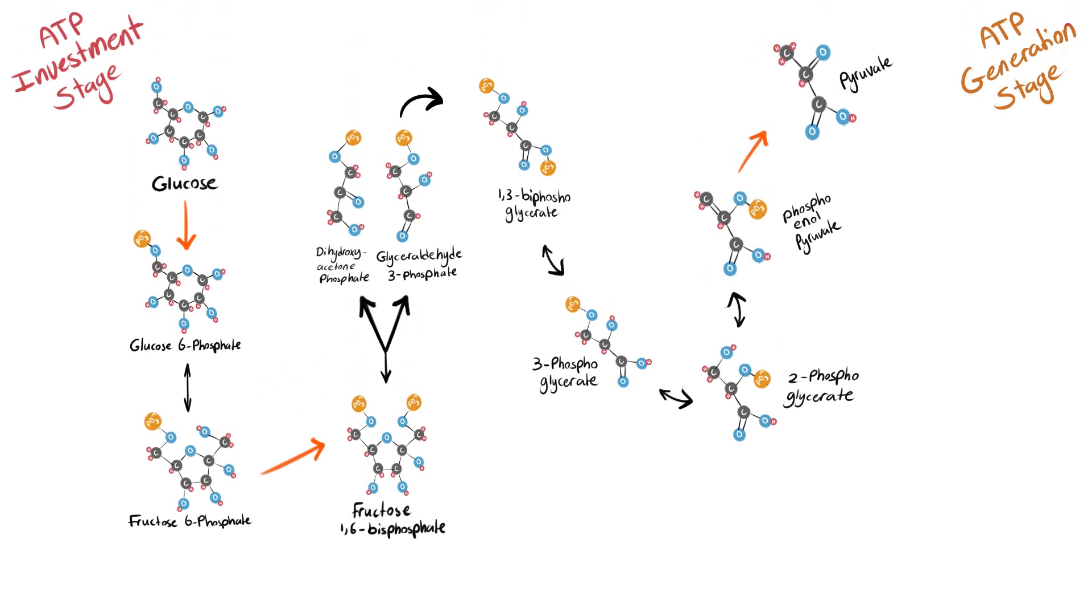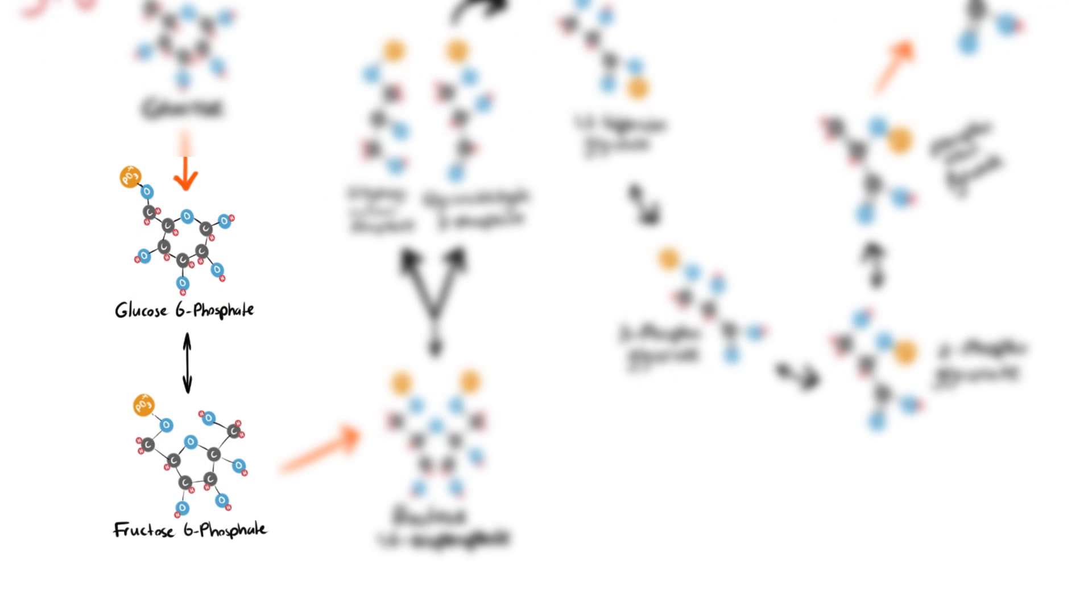Next, glucose 6-phosphate is converted into fructose 6-phosphate in a reaction catalyzed by the enzyme phosphoglucose isomerase.